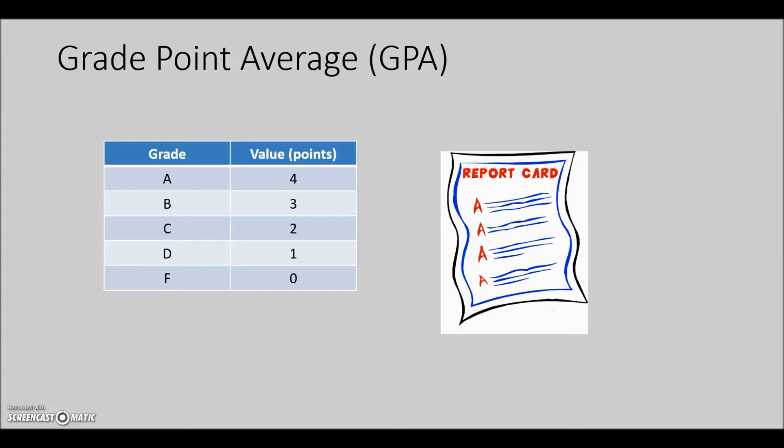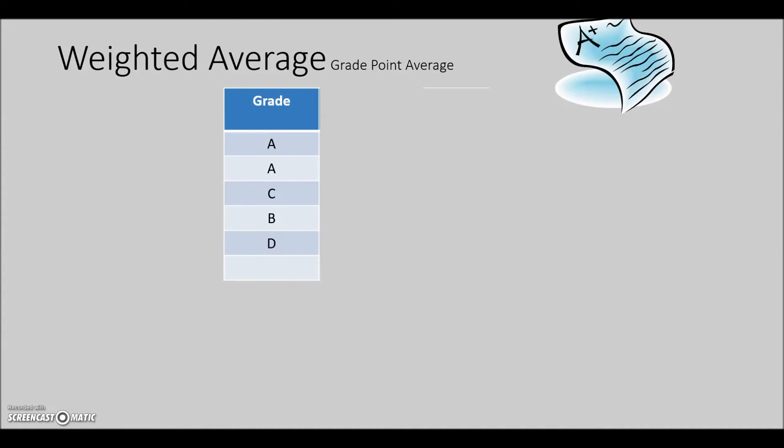Let's look at an example of an unweighted GPA. First, we want to record the point value for each grade. For example, these are grades for a student in a semester. We'll write down the correct point value next to each grade using the four-point scale.